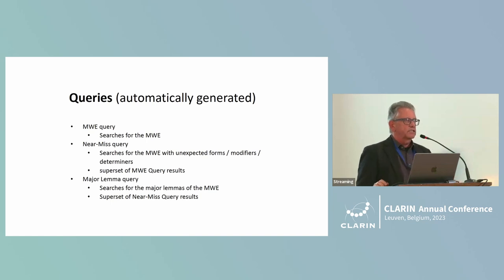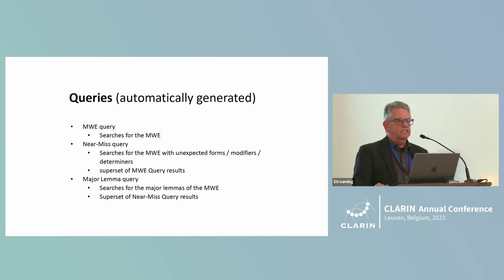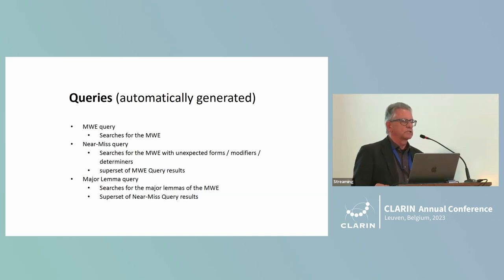If you have a multiword expression in canonical form, the system can generate three queries fully automatically. The first is the multiword expression query, which searches for utterances in which the multiword expression occurs. The second is the near miss query, which searches for the multiword expression but with unexpected forms, unexpected modifiers, or unexpected determiners included — giving a superset of the multiword expression query. The third is the major lemma query, which searches for the major lemmas of the multiword expression — basically the lemmas of the content words — and that is a superset of the near miss query results.